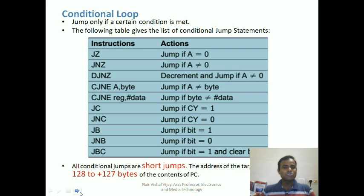Jump Not Zero is true only if the accumulator content is not equal to zero or the zero flag is not set. Decrement Jump Not Zero, when executed, decrements the content of a register and moves to the next address location provided the accumulator content is not equal to zero.